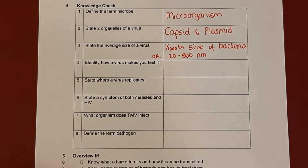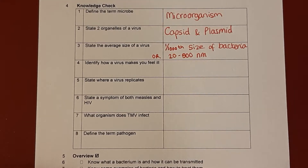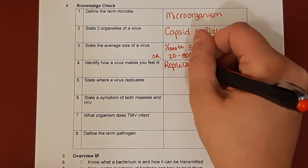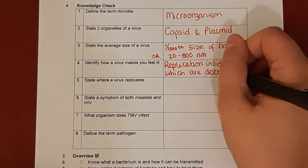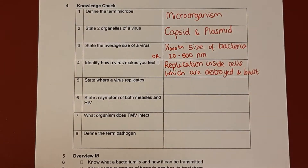We represent nanometres with NM. Question 4: Identify how a virus makes you feel ill. The virus replicates inside the cells of the host organism and then those cells burst because the virus destroys them. It's that bursting that causes the symptoms of illness. Question 5: State where a virus replicates. It replicates inside the cells of the infected organism, also known as the host.